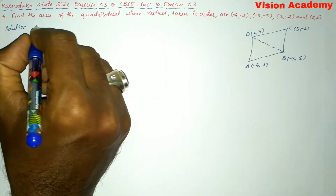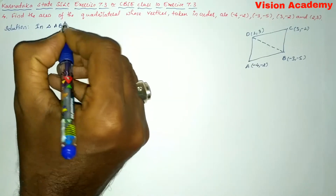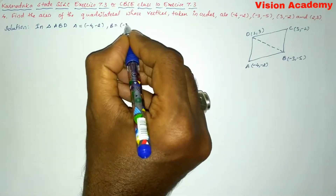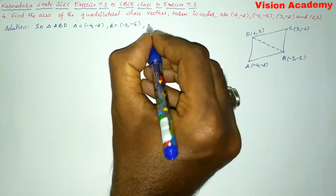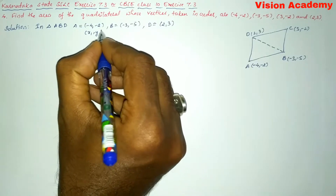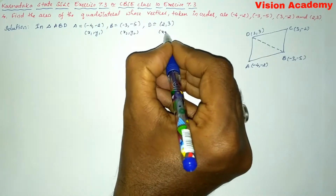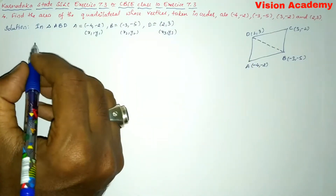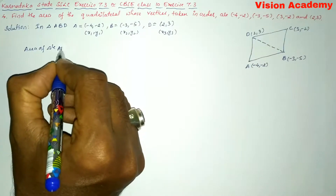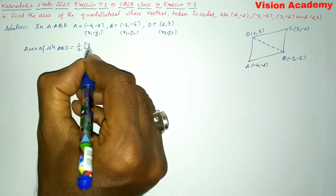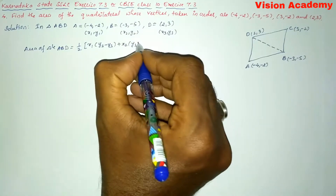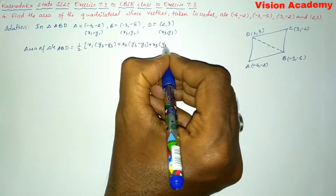First we will find the area of triangle ABD. Here A = (-4, -2), B = (-3, -5), and D = (2, 3). Let these be (x1, y1), (x2, y2), and (x3, y3) respectively. The formula for area of triangle ABD is: 1/2 × |x1(y2 - y3) + x2(y3 - y1) + x3(y1 - y2)|.